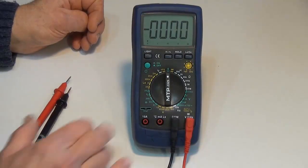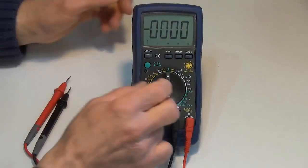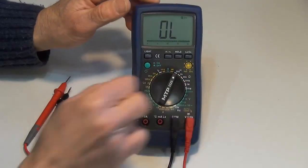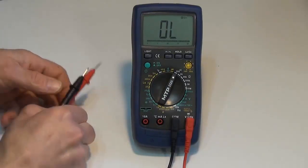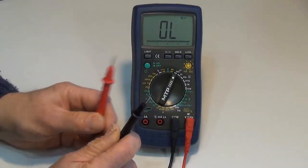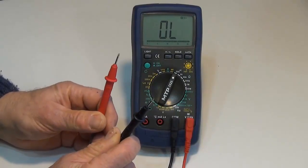Now I want to set my function switch, that's this switch here, to a resistance function and I'm going to choose the lowest resistance range. So in this meter, it's 200 ohms. Right now, this is an infinite measurement. So we have lots and lots of resistance here.